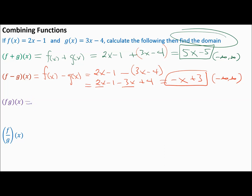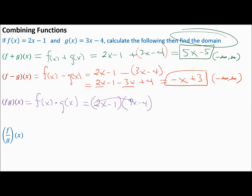For multiplication, F times G of X — by definition that is F of X times G of X. Write down F of X, which is 2x minus 1, and use parentheses to discern the two functions and show multiplication. When you have a polynomial times a polynomial, you use the distributive property — the FOIL method. 2x times 3x is 6x squared.